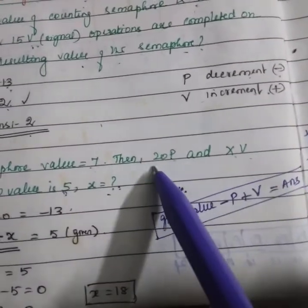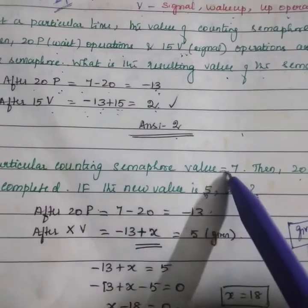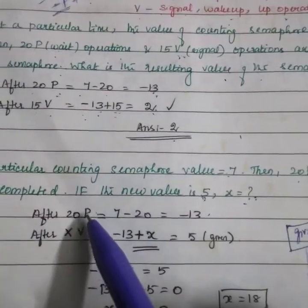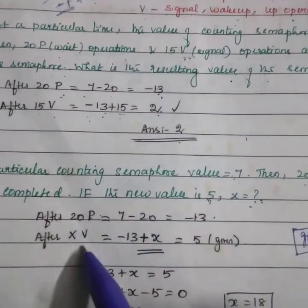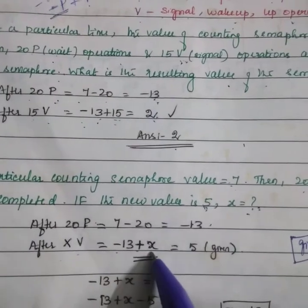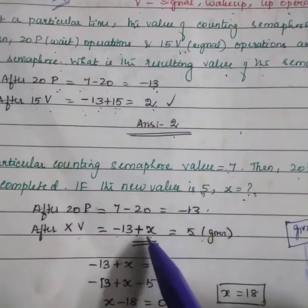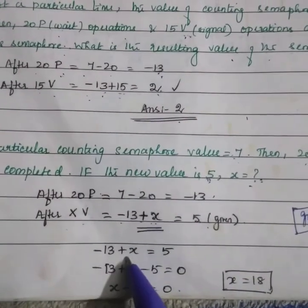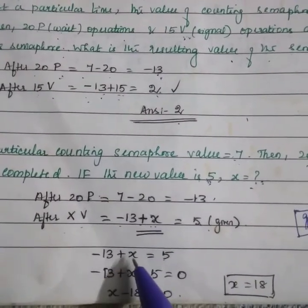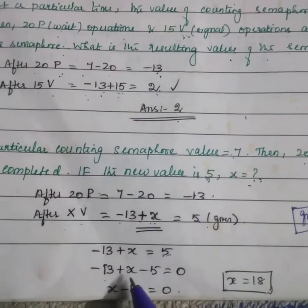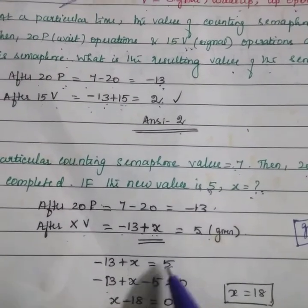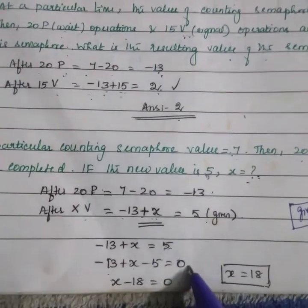After 20P and after xV: After 20P means 7 minus 20 equals minus 13. After xV equals minus 13 plus x equals 5. Substitute the value 5 here in order to find the x. So minus 13 plus x equals 5. Minus 13 plus x minus 5 brings 5 here equals 0.